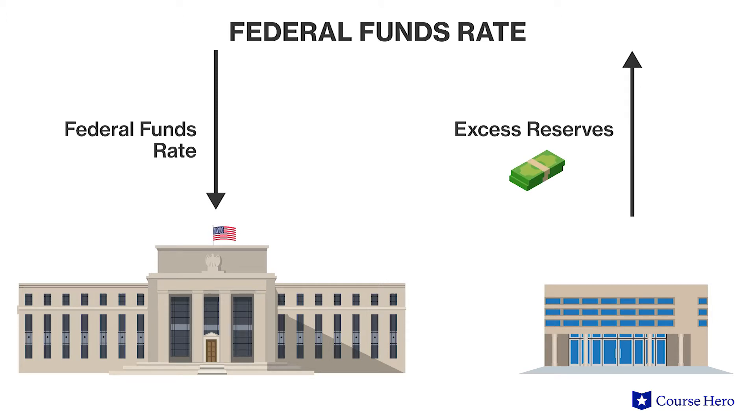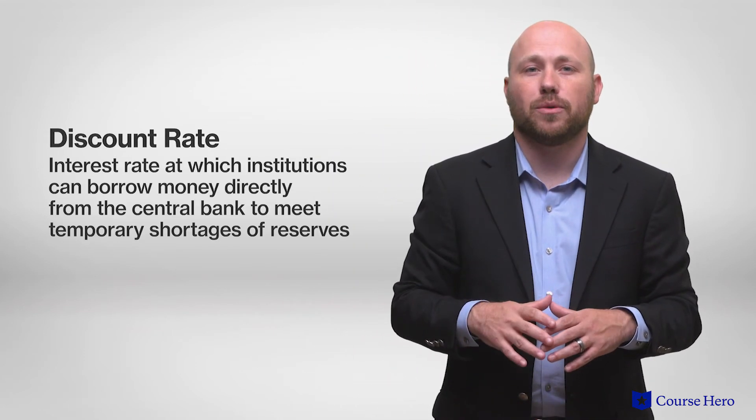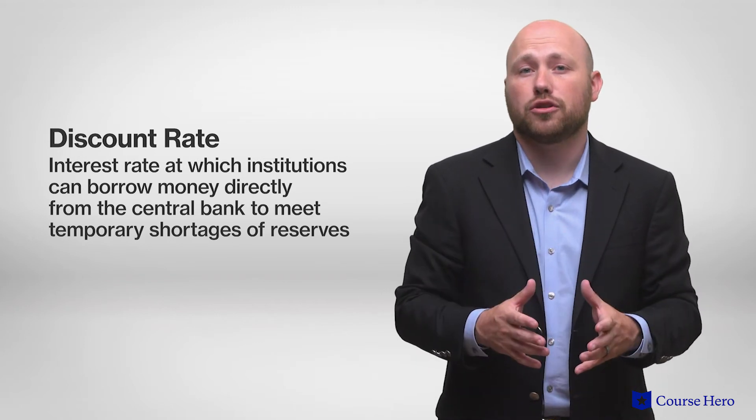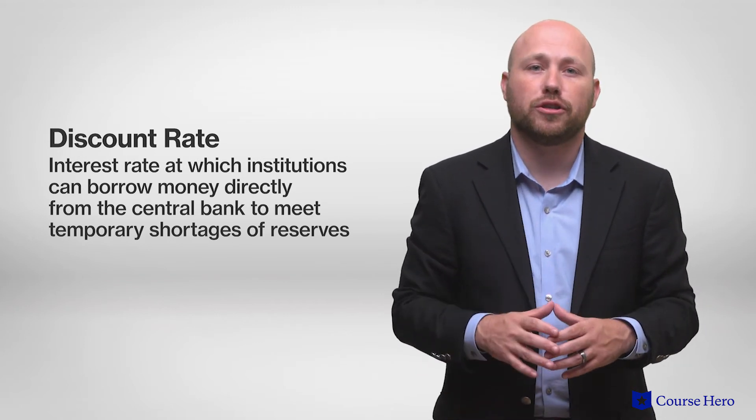The third tool the Federal Reserve uses to affect the money supply is its direct control over the discount rate. The discount rate is the interest rate at which institutions can borrow money directly from the central bank, usually on a short-term basis, to meet temporary shortages of reserves.